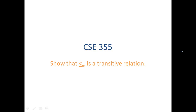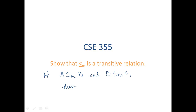In this video we will show that less than or equal to little m, or mapping reducibility, is a transitive relation. First let's remember what it means to be transitive: if A is mapping reducible to B and B is mapping reducible to C, then A is mapping reducible to C. This is what we're trying to prove.